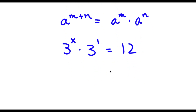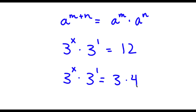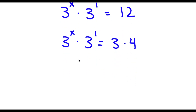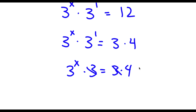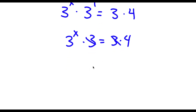Now 12, this is the same thing as 3 times 4. So now I have 3 to the power of x times 3 to the power of 1 is equal to 3 times 4. Now 3 to the power of 1 is the same thing as 3. So I have 3 to the power of x times 3 is equal to 3 times 4. So now these two 3s can simply cancel out, and I'll be left with 3 to the power of x is equal to 4.